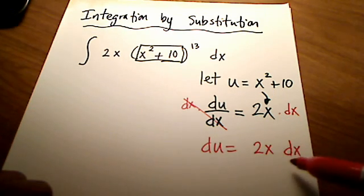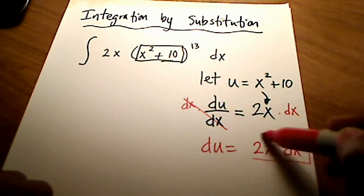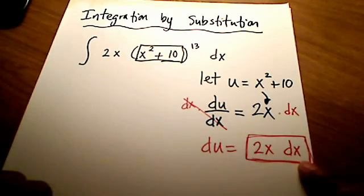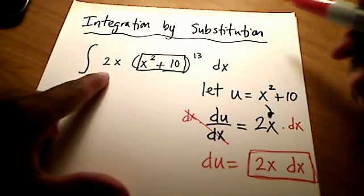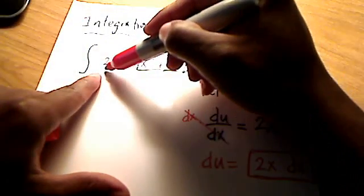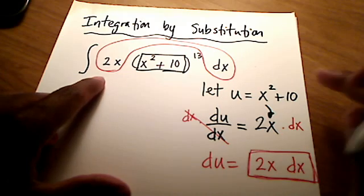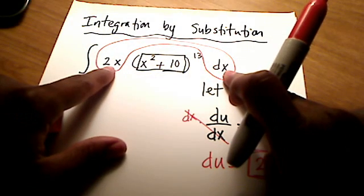Now, I'm writing it this way because do you see, right, do you see in our original problem a 2x dx? Well, sure. In fact, I'll put it in a bubble here for you. There's my 2x and there's my dx. Do you see that right there? Yeah, I see a 2x dx in the original problem.